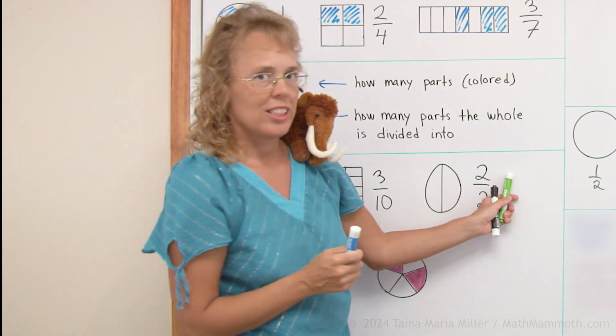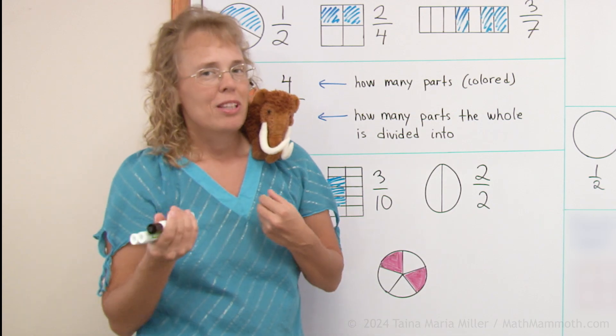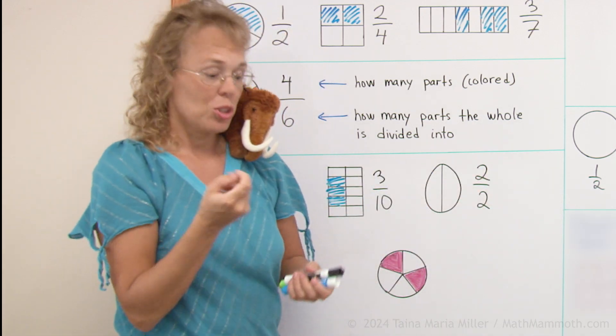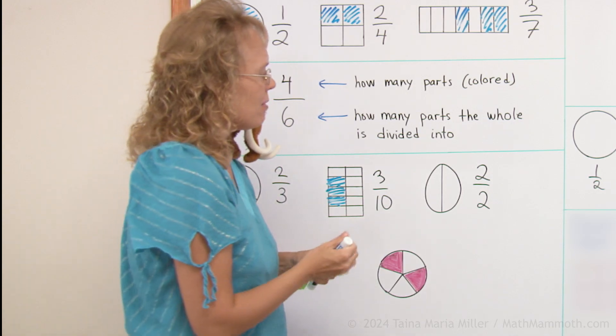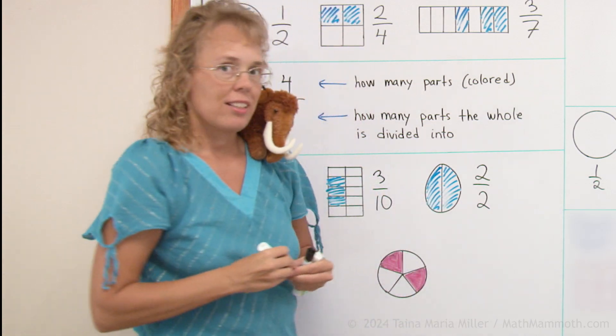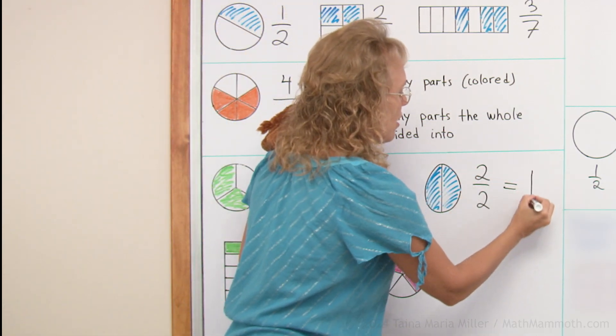And then what fraction is this? You remember when I was talking about the one half? Here we have two halves, two halves. So to color, I need to color both. In fact, this is equal to, this is the same as one whole.